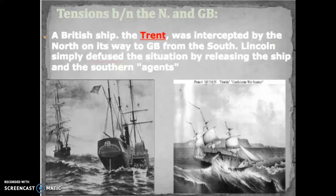The Southern plan also relies on cotton diplomacy — the idea that Europe will come to the South's aid because they need cotton. However, as discussed previously, a surplus of cotton and the emergence of Egyptian cotton undermine this strategy. The Trent Incident is also relevant: a British ship called the Trent comes from Great Britain to meet with Southern agents, but is detained by Union forces. Lincoln releases both the ship and the Southern agents to avoid further escalation, illustrating the fragile relationship between Europe and the Confederacy.